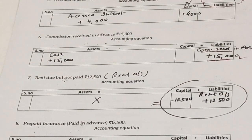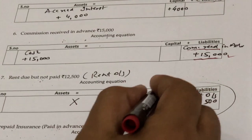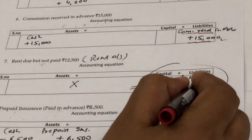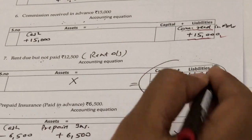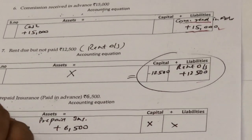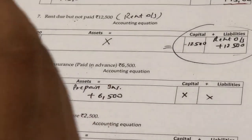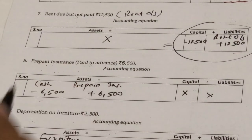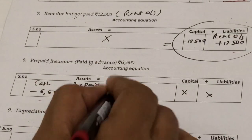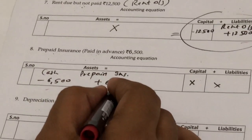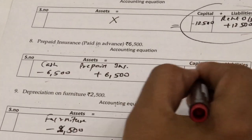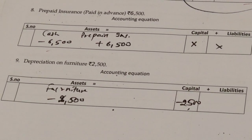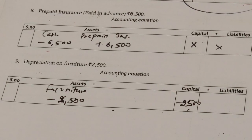Next transaction: rent due but not paid. The rent is due but not yet paid, so we subtract from capital because we have taken the services, and open a new column on the liability side for rent outstanding. Following that, prepaid insurance: we have paid the money but the service is not yet received, so cash is subtracted and a new column for prepaid insurance is opened on the asset side. Nothing is done on the liability side.